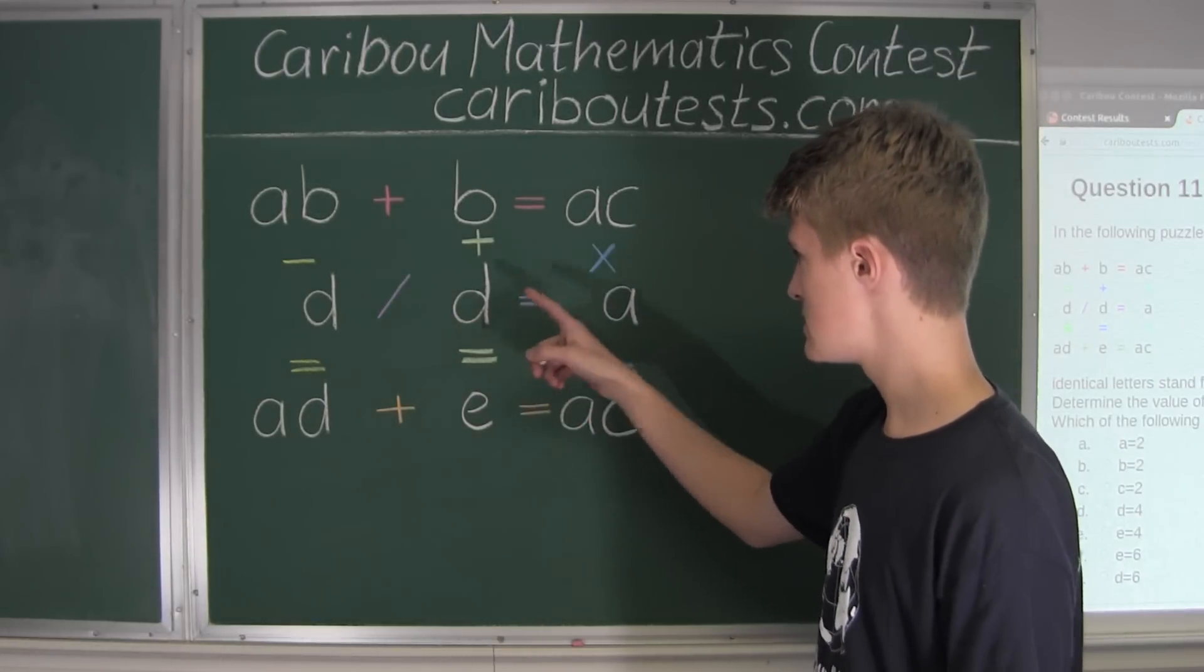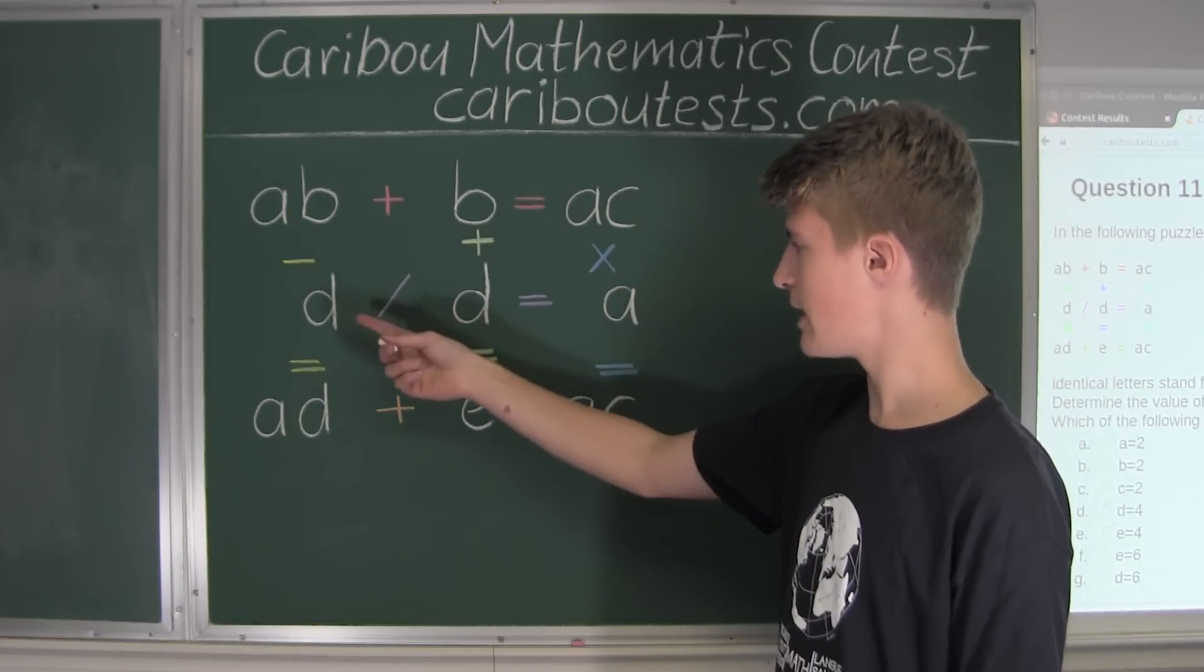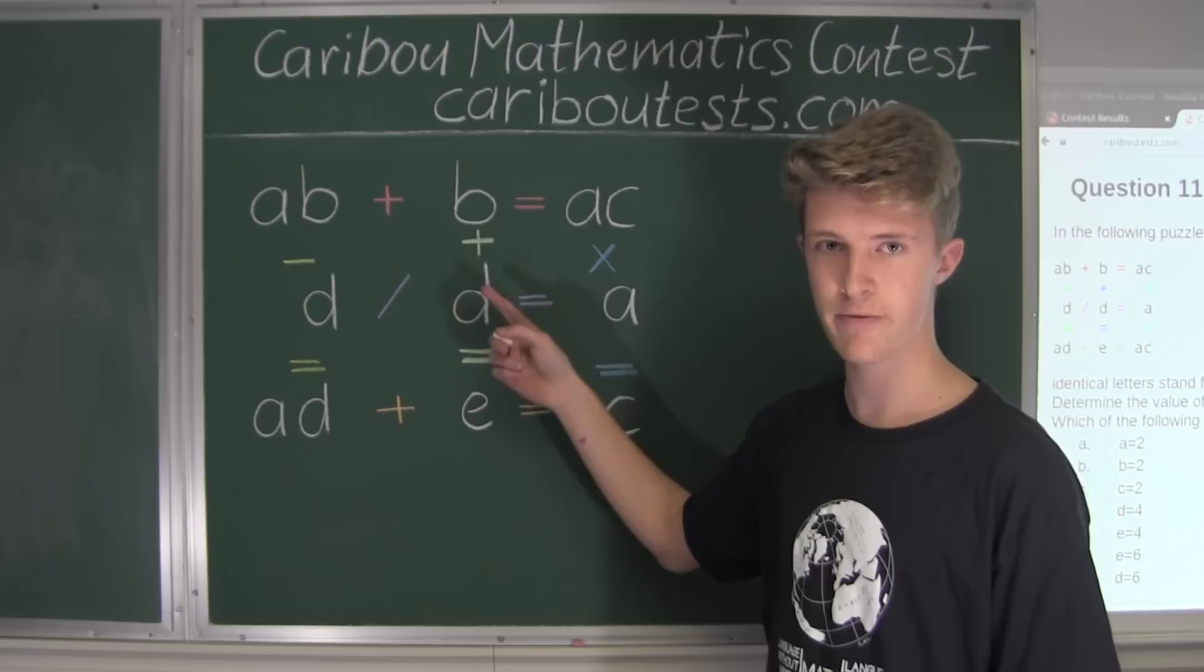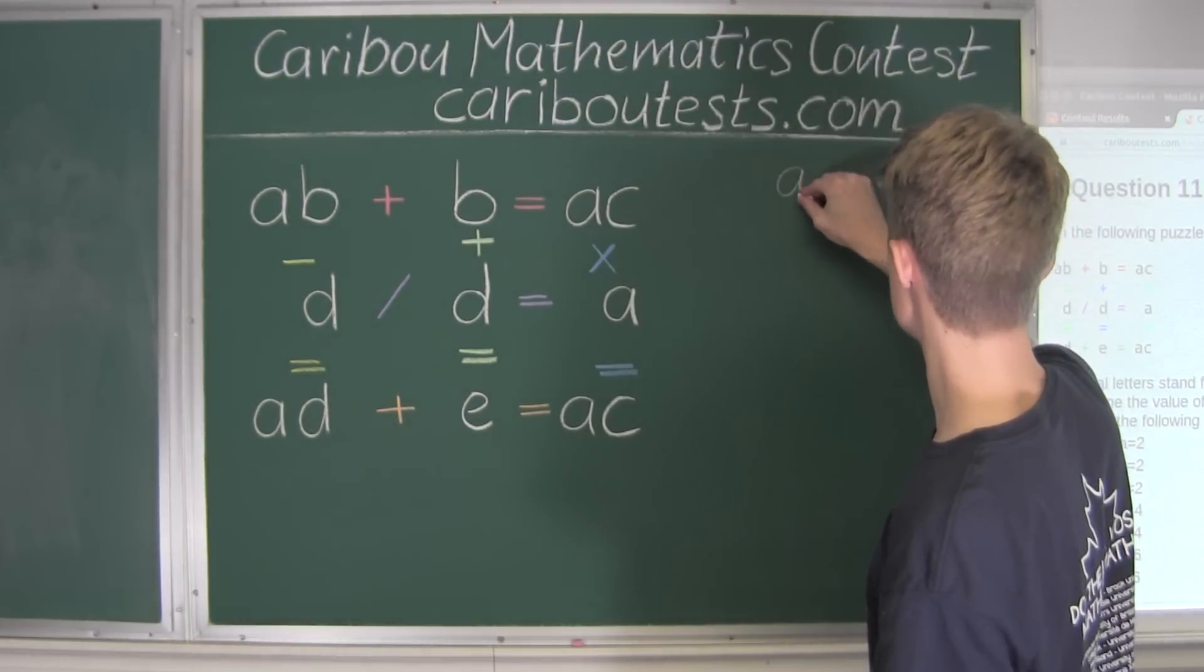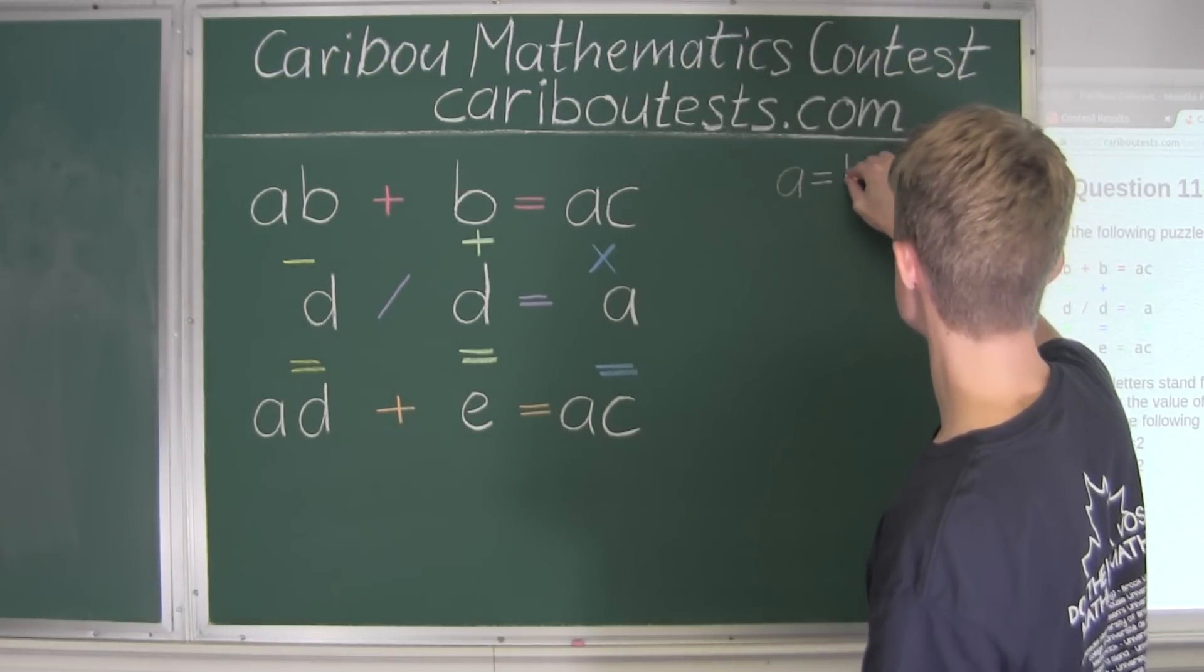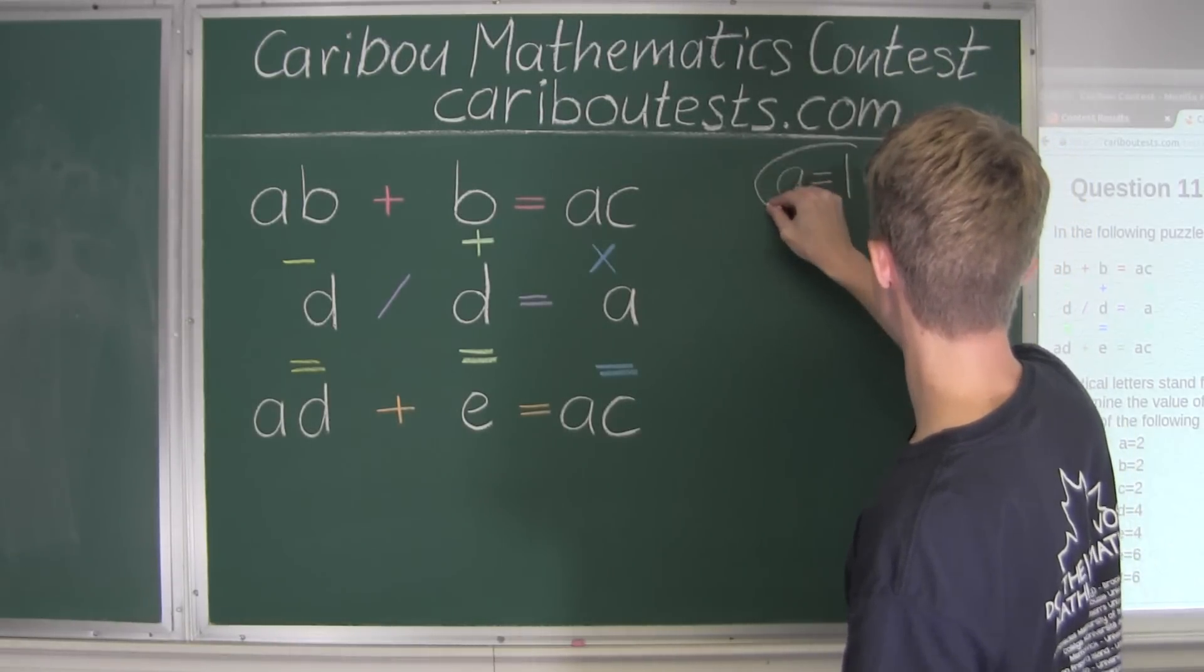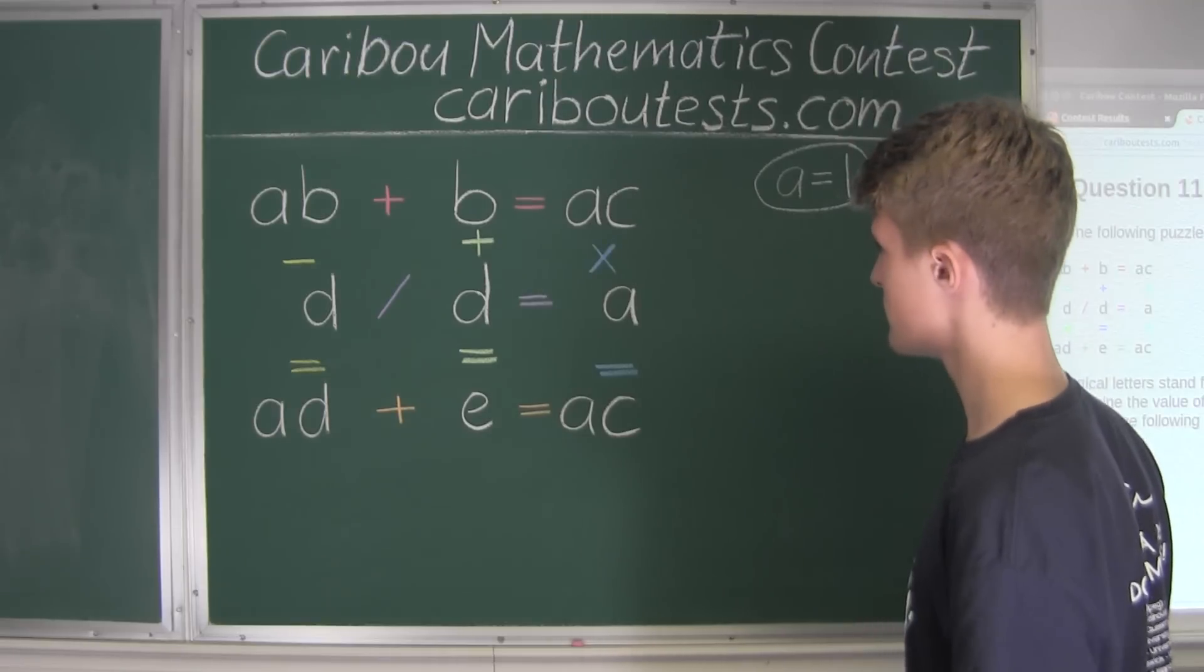So now, let's start with this equation. So D divided by D is equal to A, and any number divided by itself must equal to 1. That means that A must equal to 1. And we will circle this just so we know that it must be true.